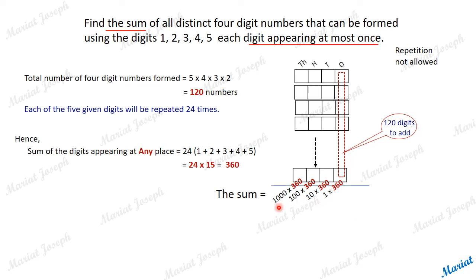So, the number is going to be 1000 into 360 plus 100 into 360 plus 10 into 360 plus 1 into 360, which can be calculated as 360 into 1111. And that eventually gives the number... oh, sorry, 399,960 will be the sum.